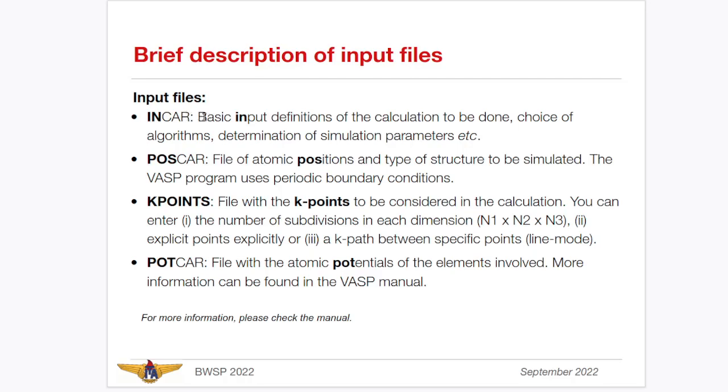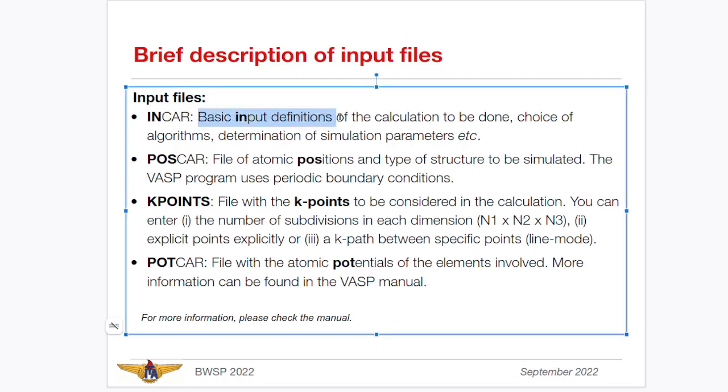Some others like Quantum Espresso already has all this information just one file. But let's show you some form for basic knowledge about the input files. You have the INCAR, which you provide the basic input definitions, which calculations you want to do. POSCAR file, the file with position information, which elements you have in your structure, in which positions, and how is the Bravais lattice, and so on. Basically, all the positions in periodicity you provide VASP in this input.